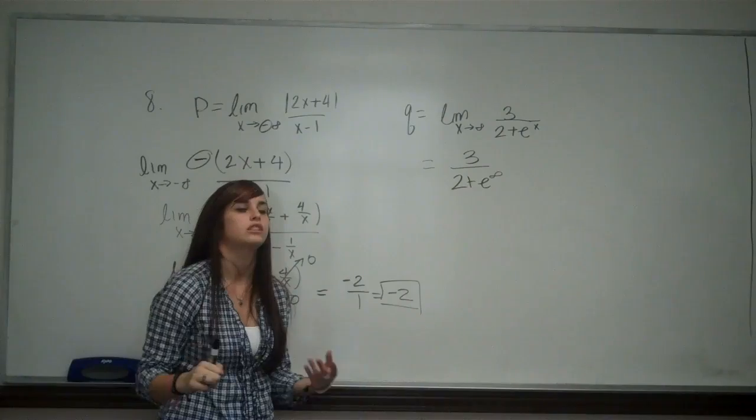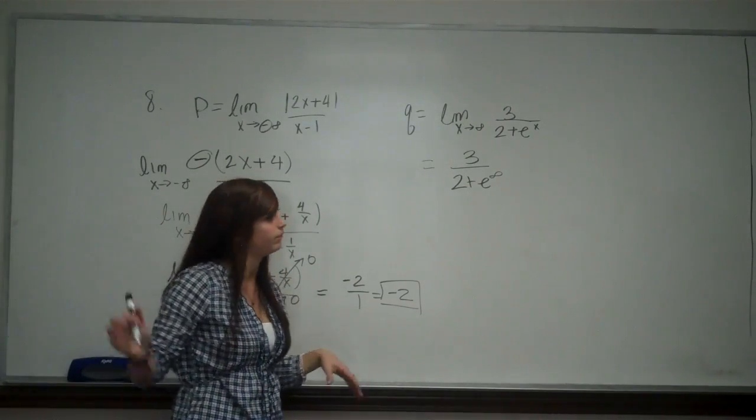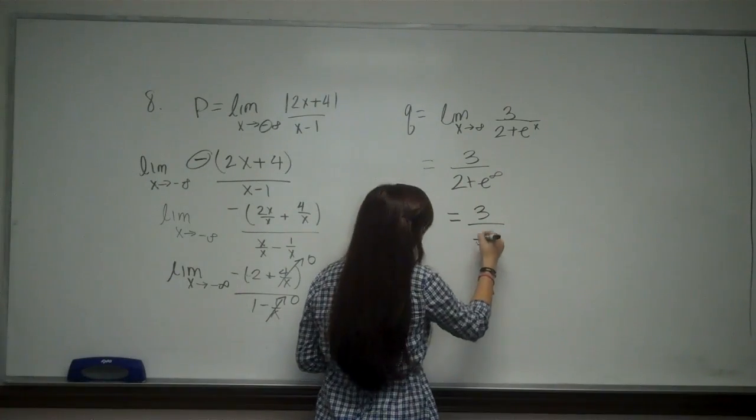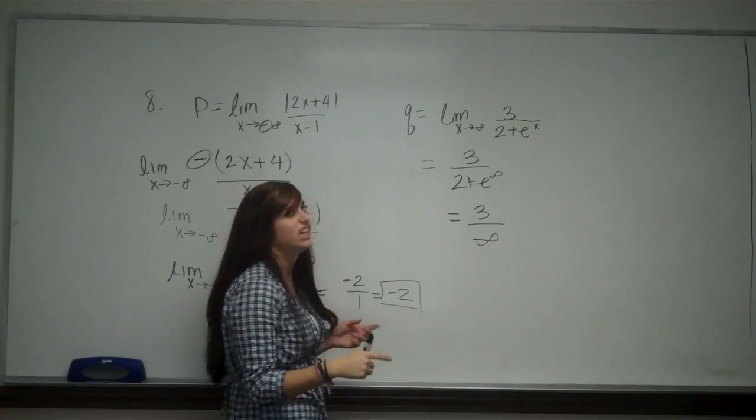Now, E to the infinity is just a really big number, because E is a number, correct? 2.7. So this is going to be 3 over infinity, because infinity plus 2 is still infinity.